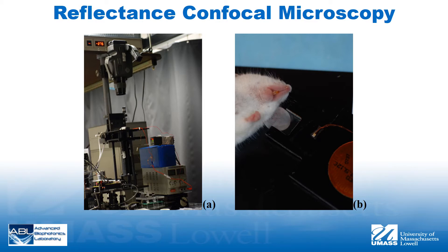The mice were placed supine on the inverted sample stage as shown in panel B. Confocal images and videos were acquired as mouse ears were heated from 25 to 60 degrees Celsius using the temperature control system previously described. For validation purposes, temperature was concurrently monitored using the thermal camera.